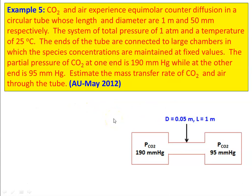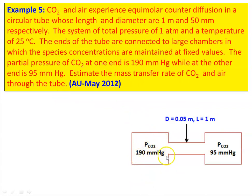Example number 5. CO2 and air experience equimolar counter diffusion in a circular tube of length 1 m and diameter 50 mm. The system is at 1 atm total pressure and 25°C. The ends of the tube are connected to large chambers where species concentration is maintained at a fixed value. The partial pressure of CO2 at one end is 190 mmHg and at the other end is 95 mmHg. Estimate the mass transfer rate of CO2 in air through the tube.